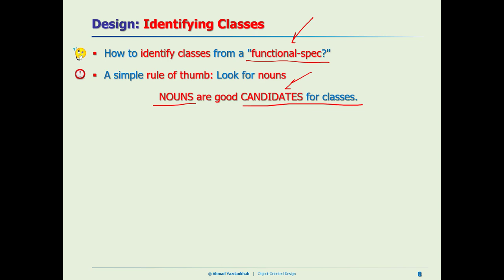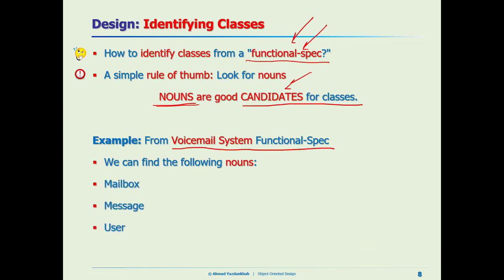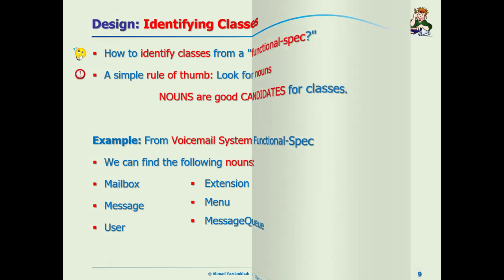Let me summarize: we identify classes from the functional spec. We read it — especially where it describes the problem and what we want to do — and look for nouns as candidates for classes. Here is an example: in a voicemail system functional spec, nouns like mailbox, message, user, extension, menu, and message queue are good candidates for being classes.